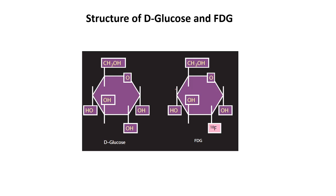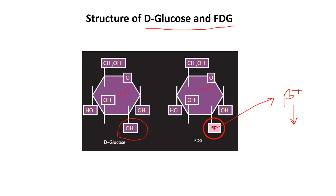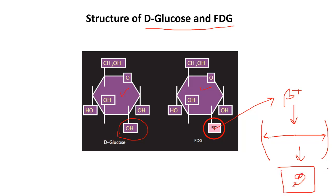Now let's look at the structure of D-glucose and FDG — fluorodeoxyglucose. The structures are nearly identical except at one position: D-glucose has a hydroxyl group, while FDG has F-18. F-18 is a proton-rich nuclide that decays by emitting a positron, which annihilates with an electron to produce two gamma photons each with an energy of 511 keV. These photons are detected by the PET camera and used to reconstruct medical images.